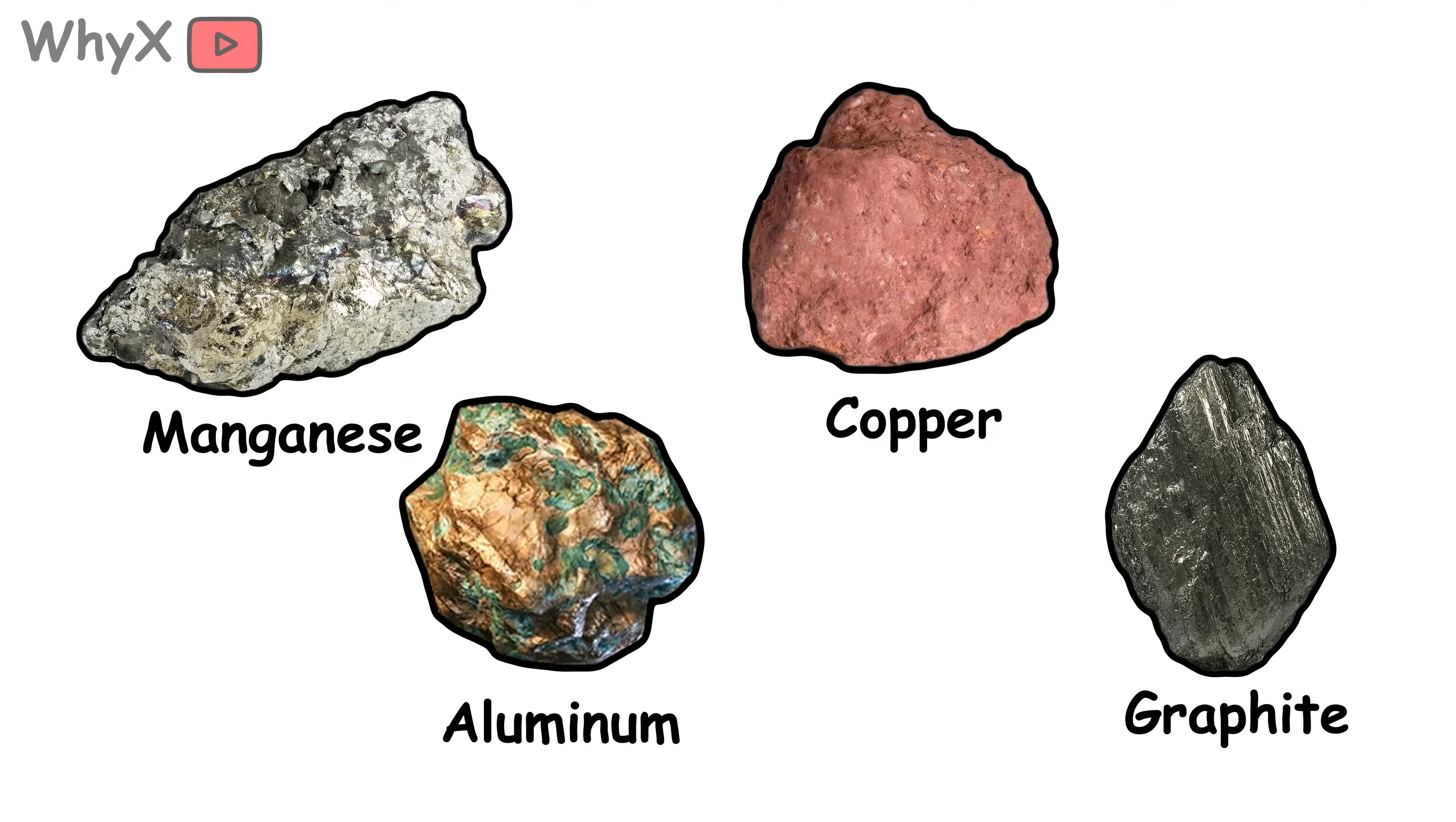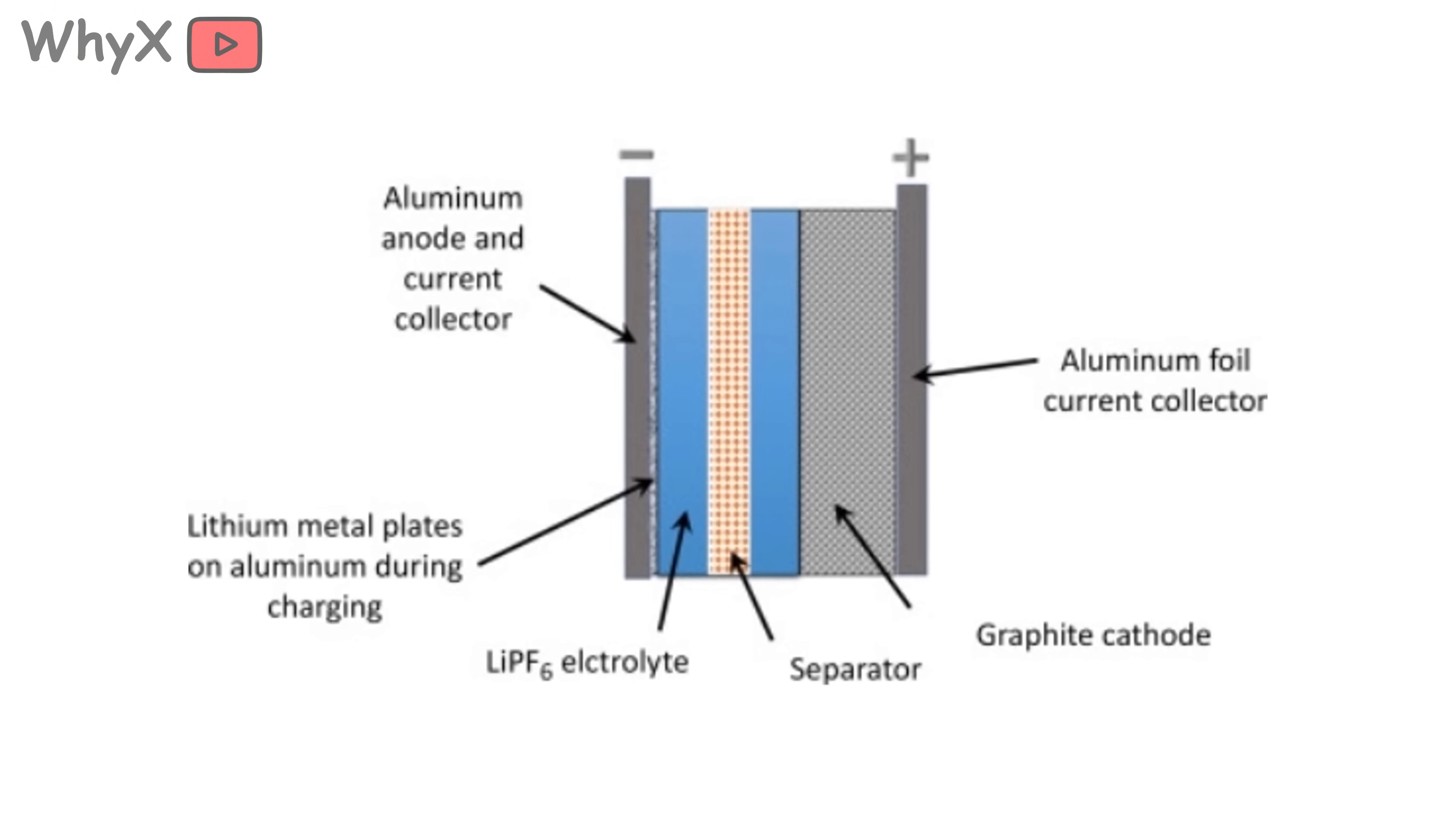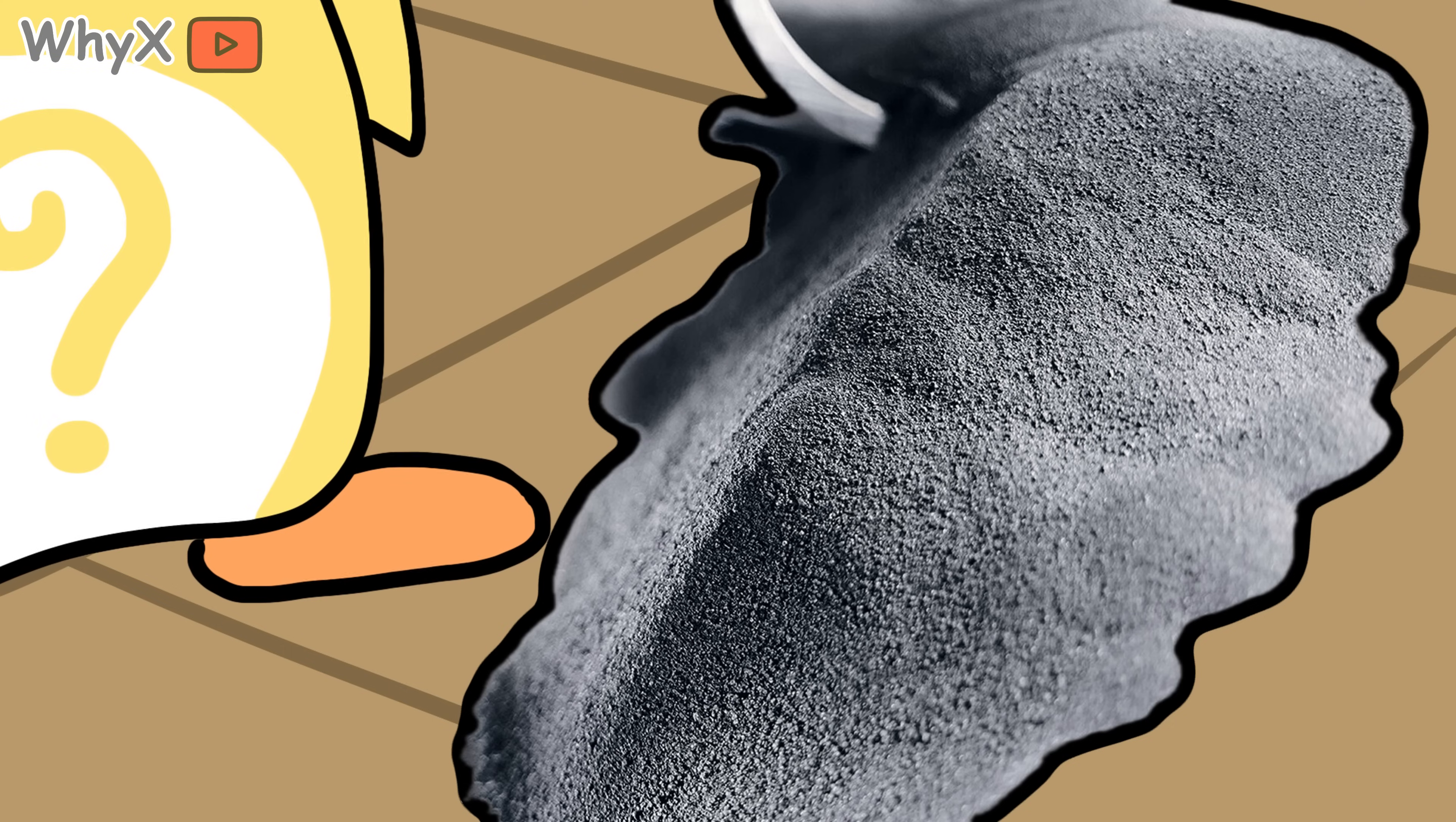Manganese, aluminum, copper, and graphite are the unsung heroes. Manganese adds stability to the battery's chemical reactions, making the whole system more reliable. Aluminum helps certain parts stay light and strong. Copper is the wiring, the highway electricity uses to move in and out of the battery. And graphite, that is where the lithium ions hang out when they are off-duty. And no, it is not the same graphite in your pencils. It has to be purified and processed to a high standard before it can work in a battery.